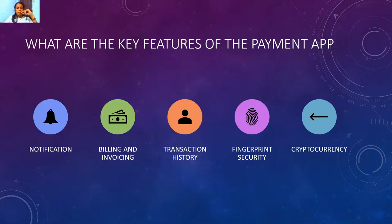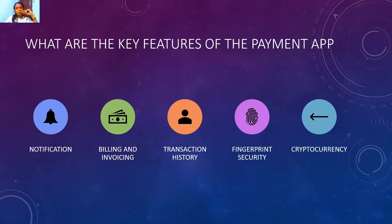Billing and invoicing tracks how much cash you've deposited or withdrawn. Transaction history lets you trace how much you've spent or withdrawn. Fingerprint security is a key security feature for upcoming apps — since fingerprints are unique to each individual, it provides a distinct form of authentication to access your application.